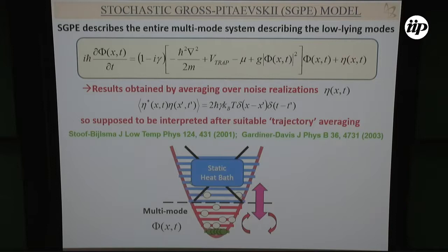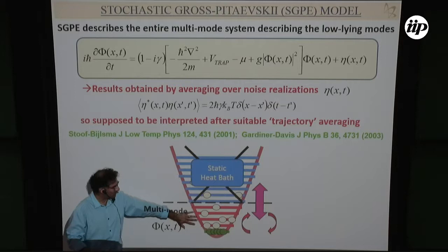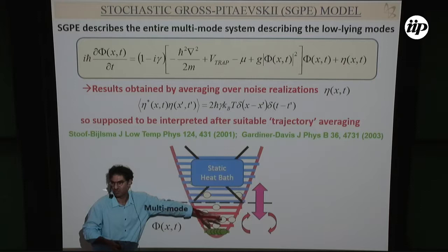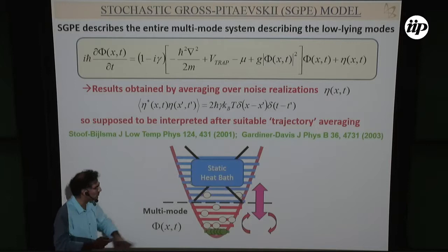By solving this equation you can see how particle redistribution is happening into the system. Then you have to do extra work to find what is your condensate and what is not. In a sense you get something that looks like what you might get from the experiment, and then numerical analysis is needed to separate out the two parts of the system.